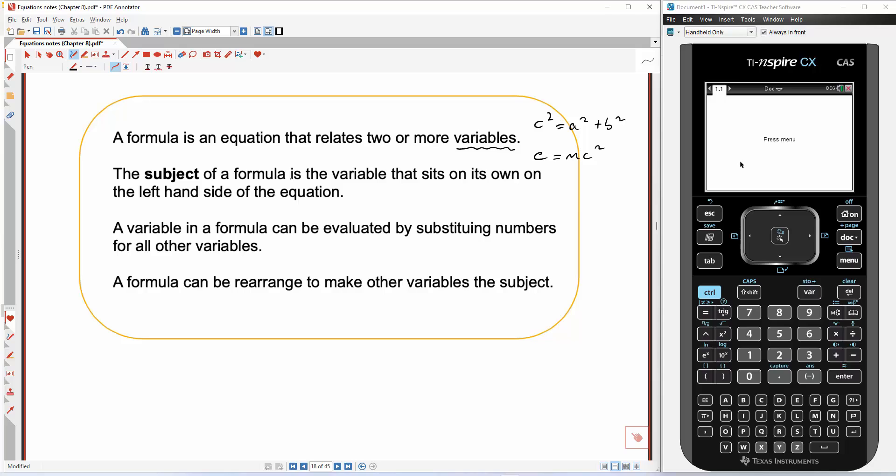The subject of a formula is the variable that sits on its own on the left-hand side of the equation. It can be on the right-hand side, but we usually put it on the left-hand side. So in this case here, in Einstein's theory of relativity, e is the subject.